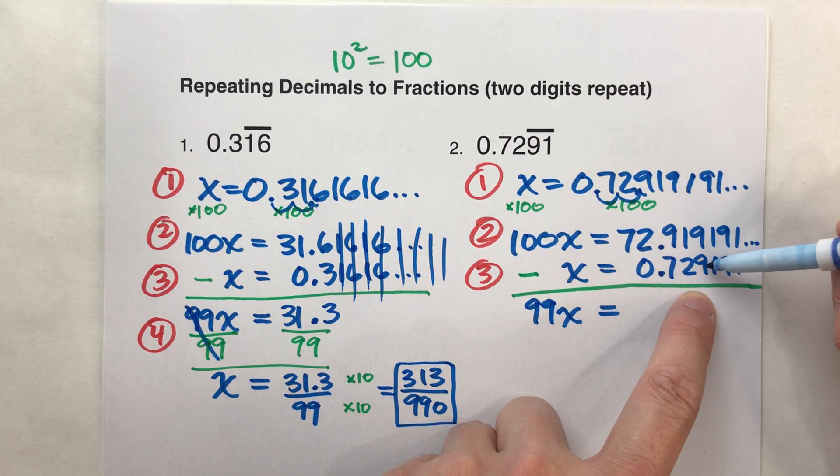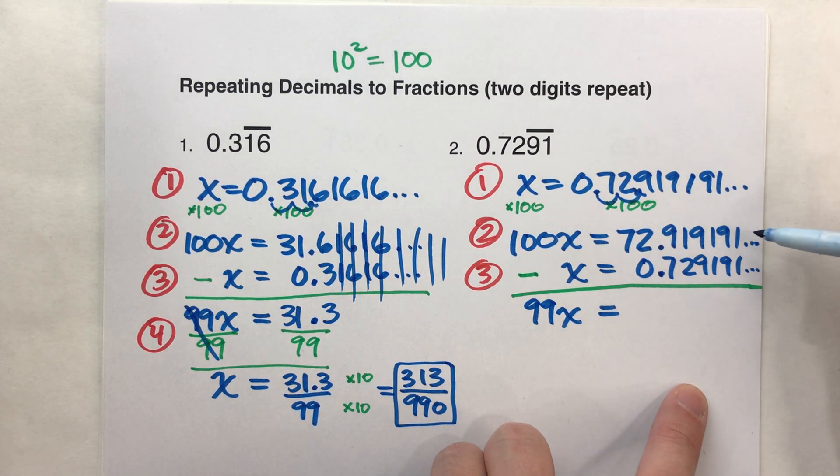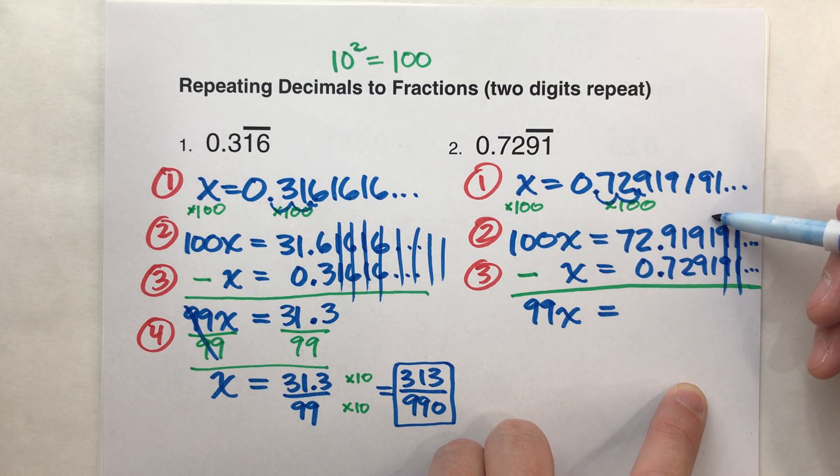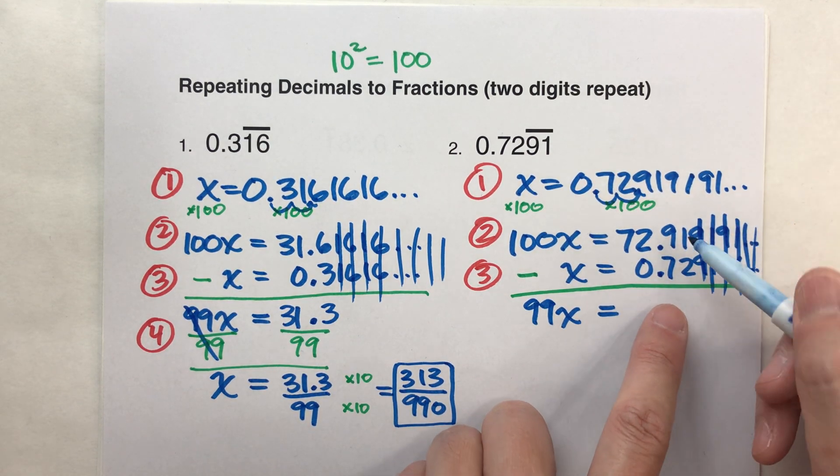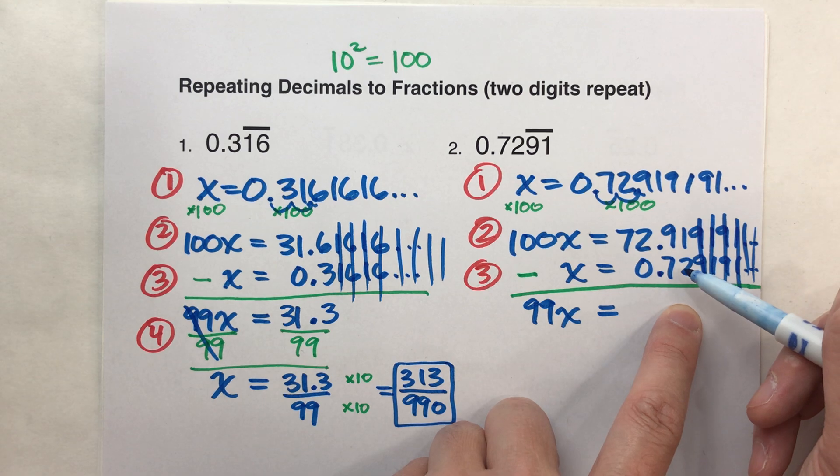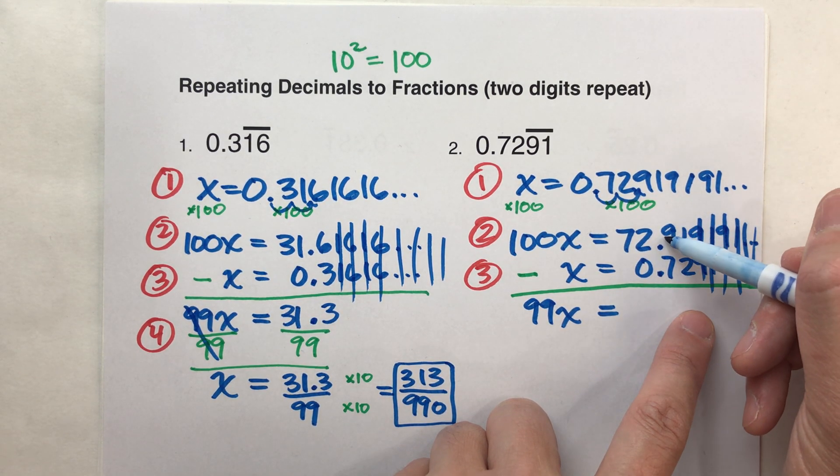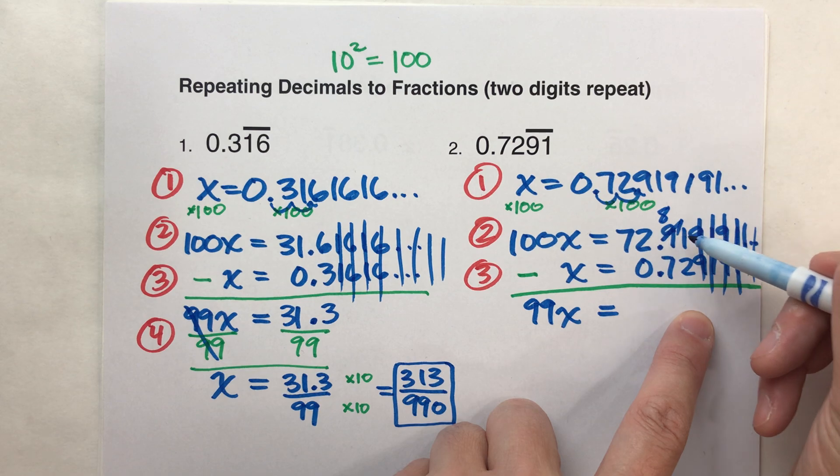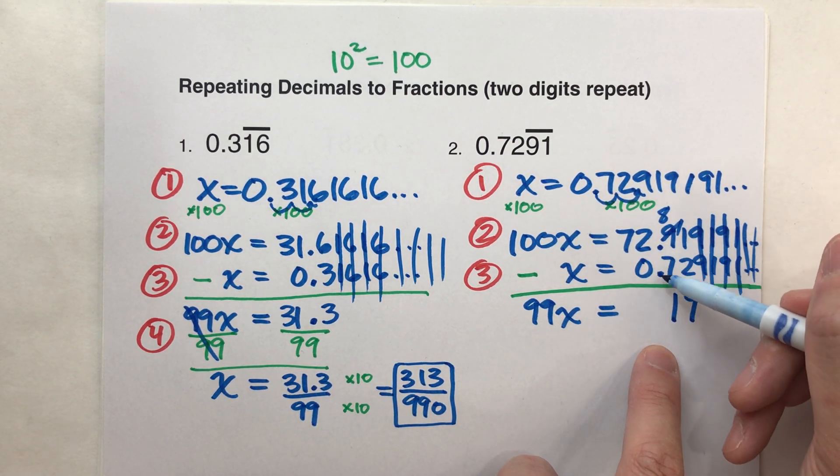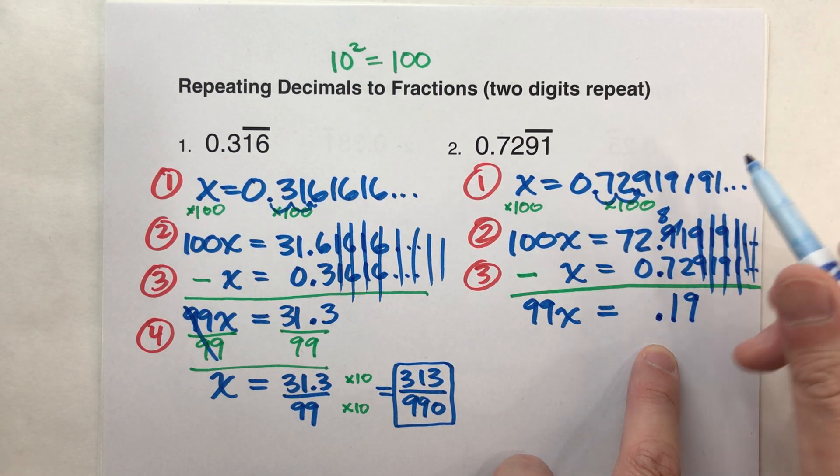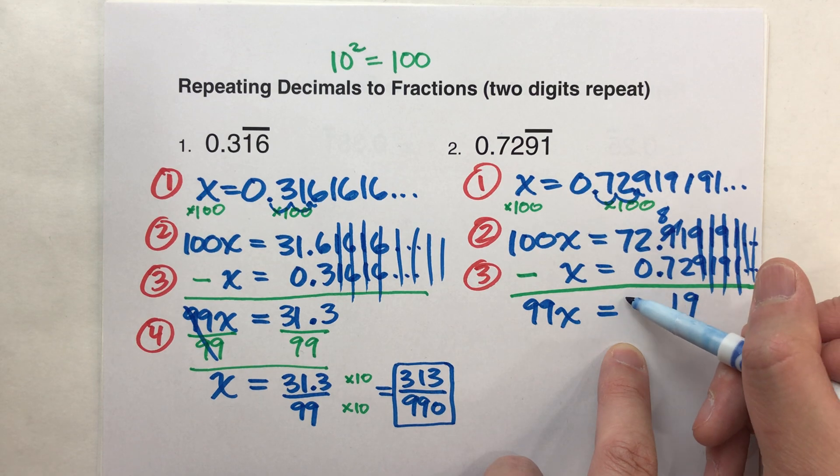Because look here. The 9 minus 9, the 1 minus 1, the 9 minus 9, the 1 minus 1, it'll just repeat forever. And 1 minus 1 is 0, 9 minus 9 is 0. All these repeating digits will subtract off until we get to this place. This is where the digits are different. So this is where we can actually start subtracting. Borrow from the 9, make it an 8, make this 11. 11 minus 2 is 9. 8 minus 7 is 1. Drop down my decimal. Making sure, by the way, that you lined up your decimals when you wrote this down. 72 minus 0 is 72. I subtracted the two equations.